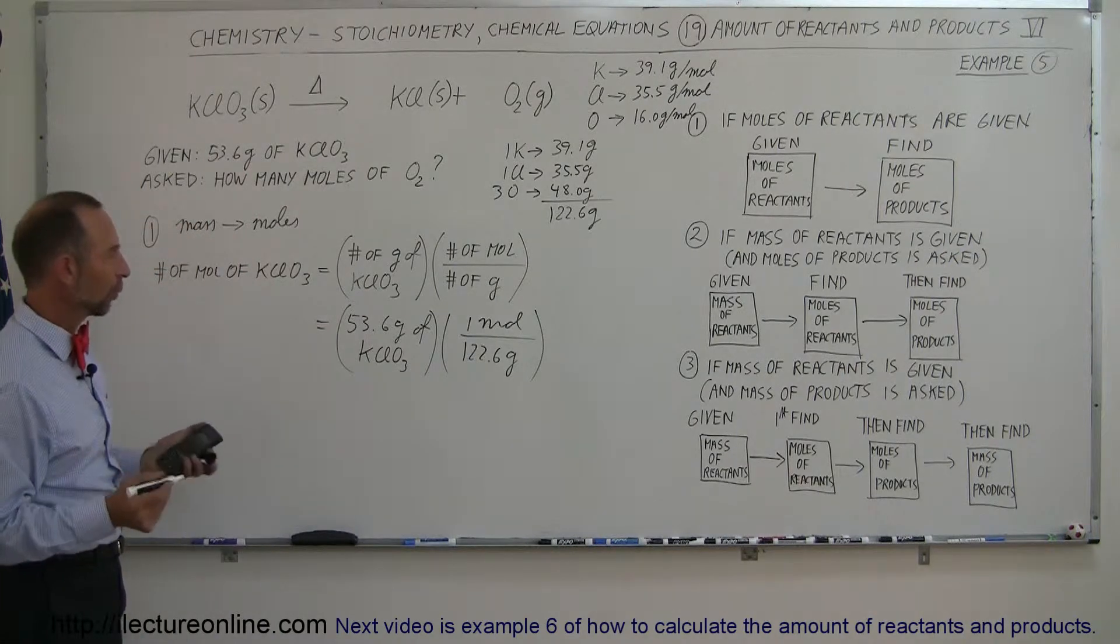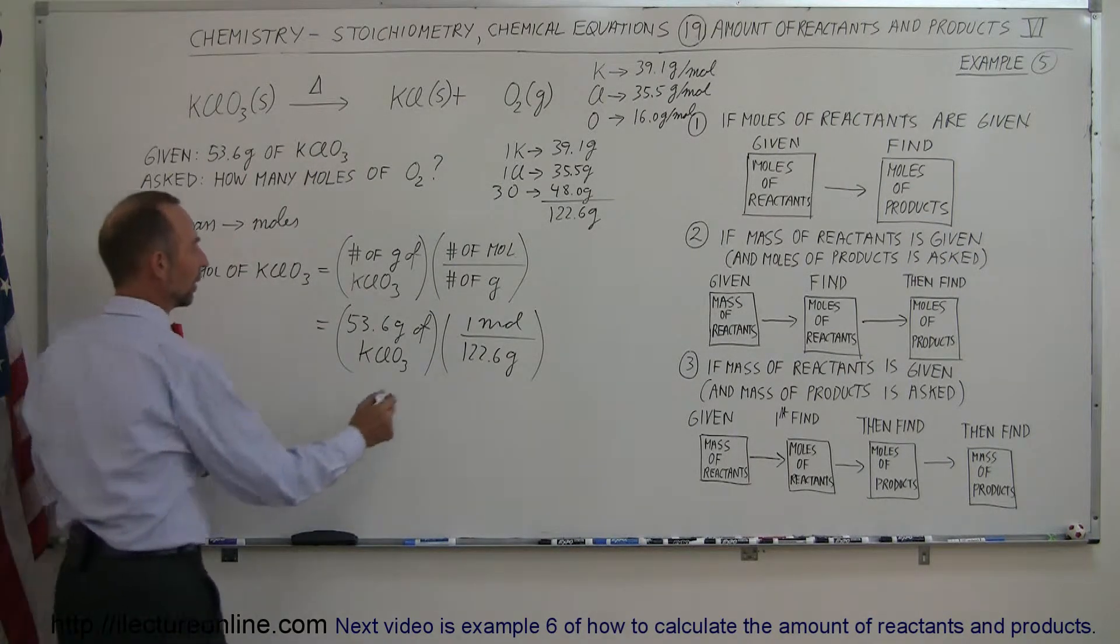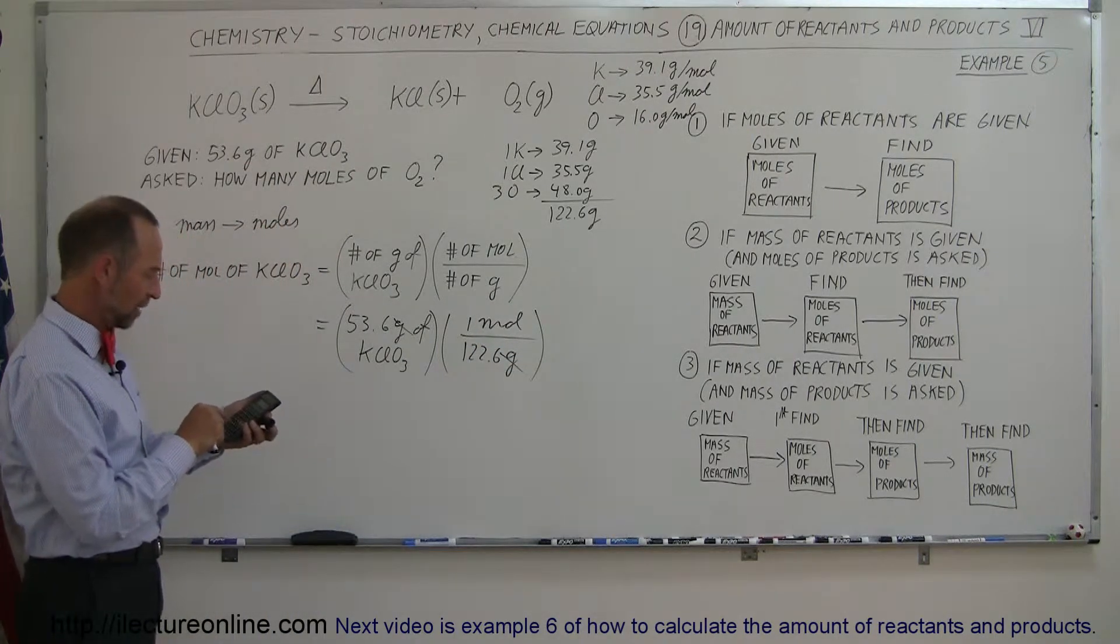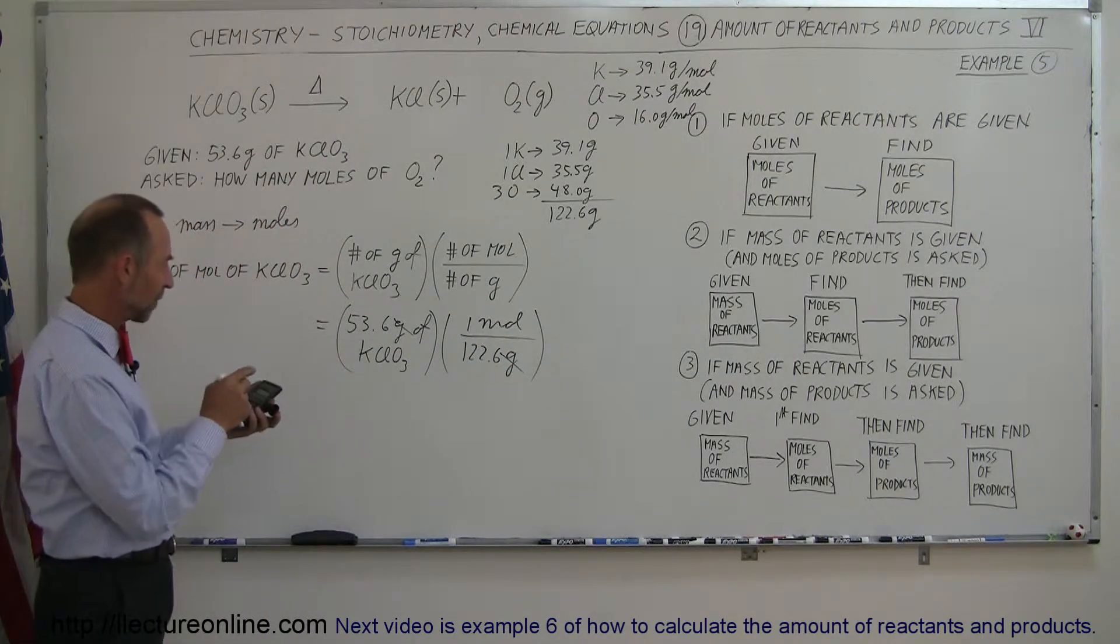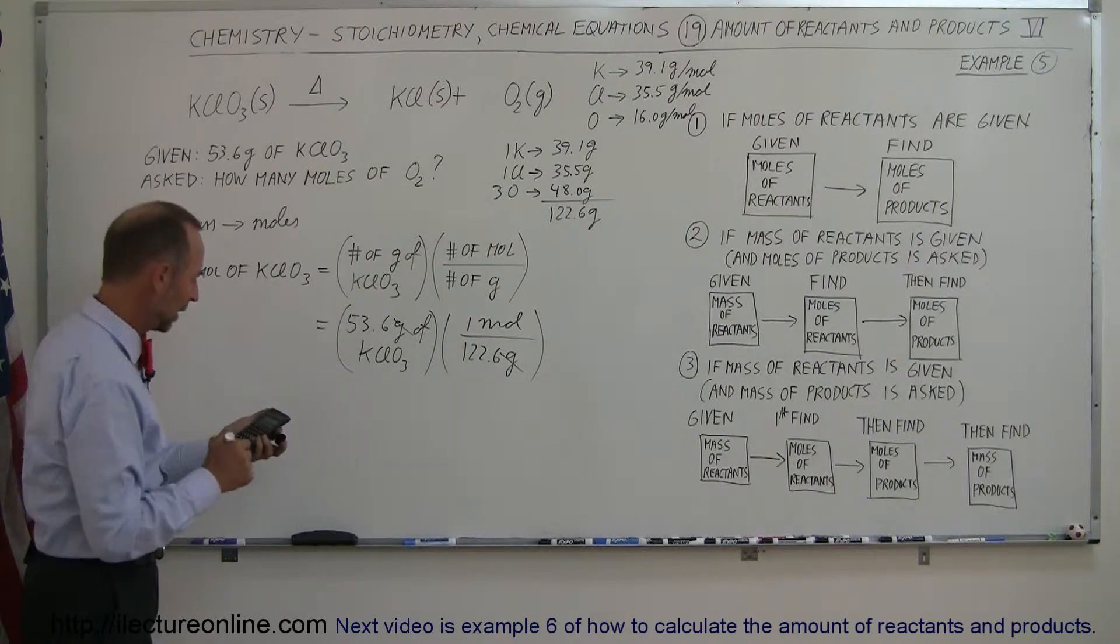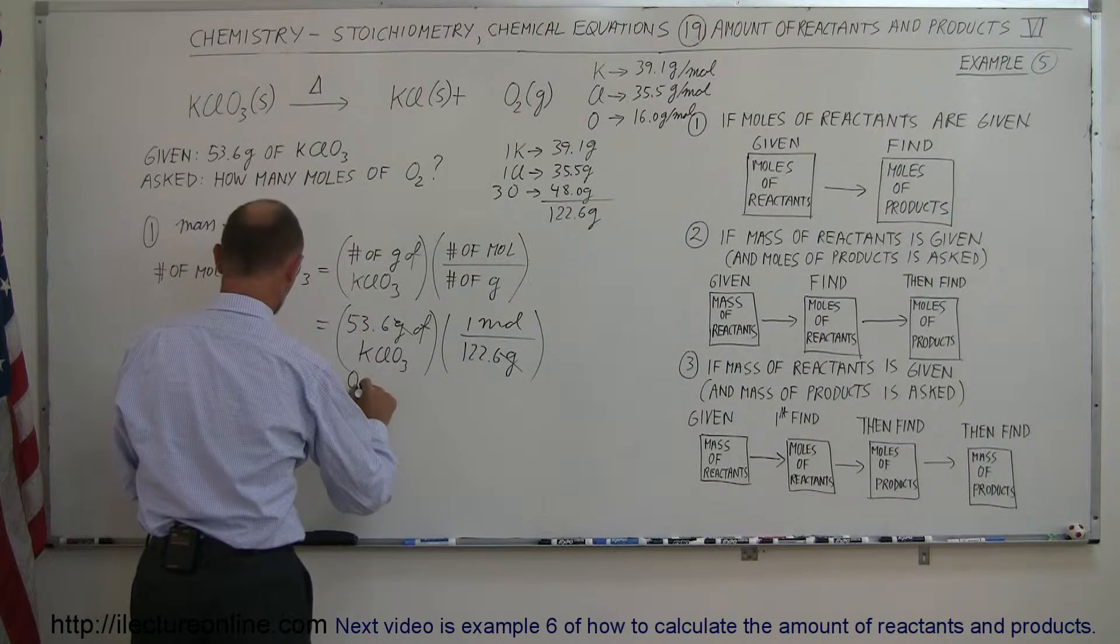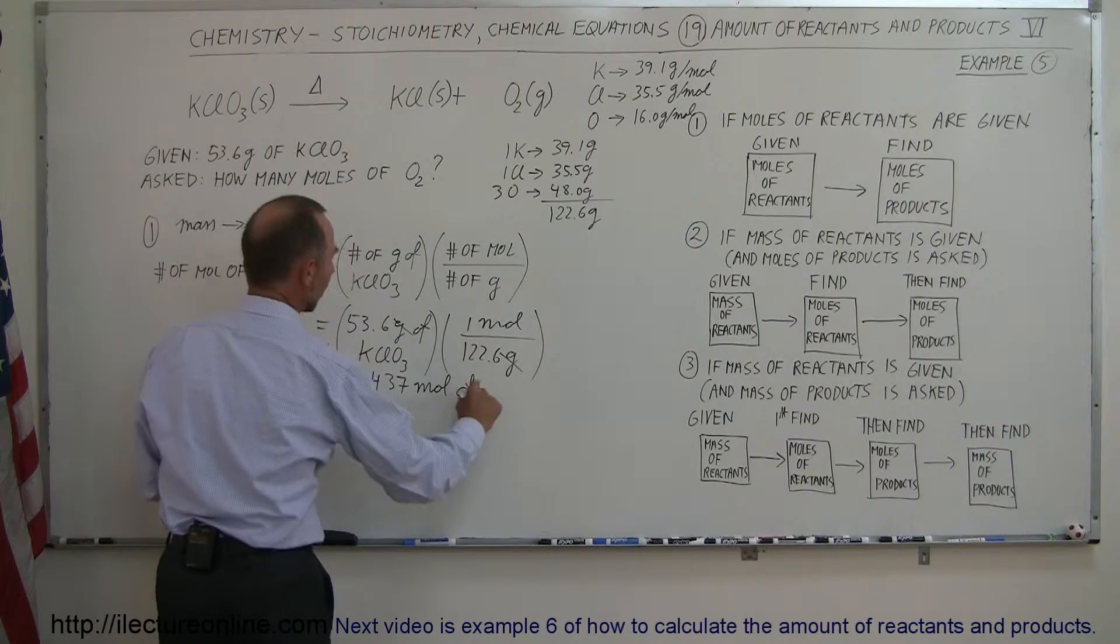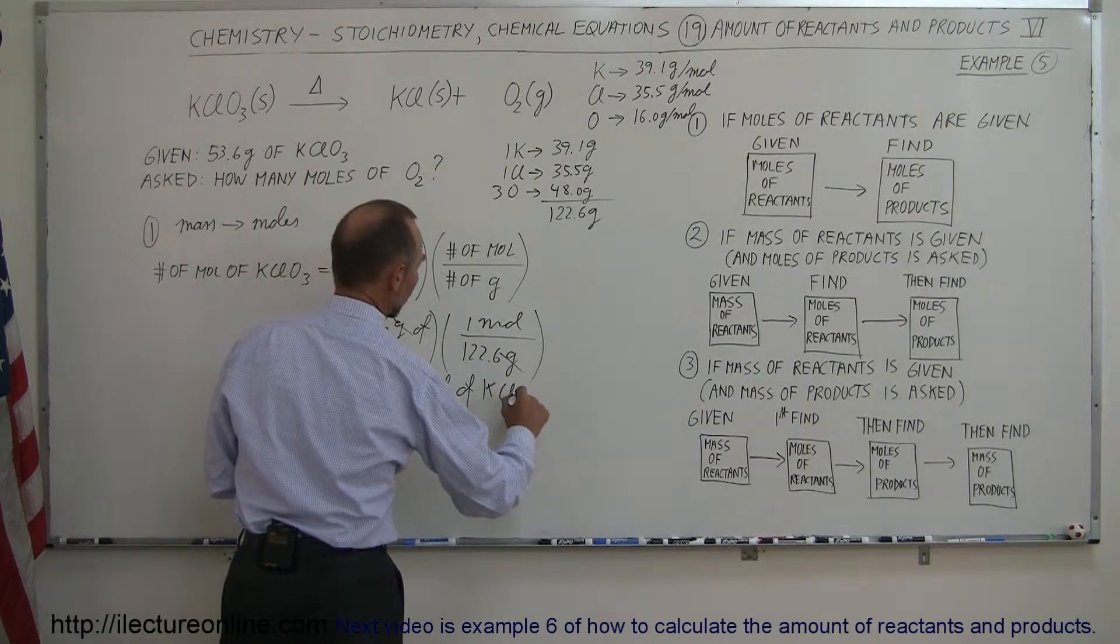All right, so that's one way to find it. So that will get rid of the grams, and we're left with moles. So 53.6 grams that we start with, divided by 122.6 grams per mole, ends up with 0.437 moles of potassium chlorate.